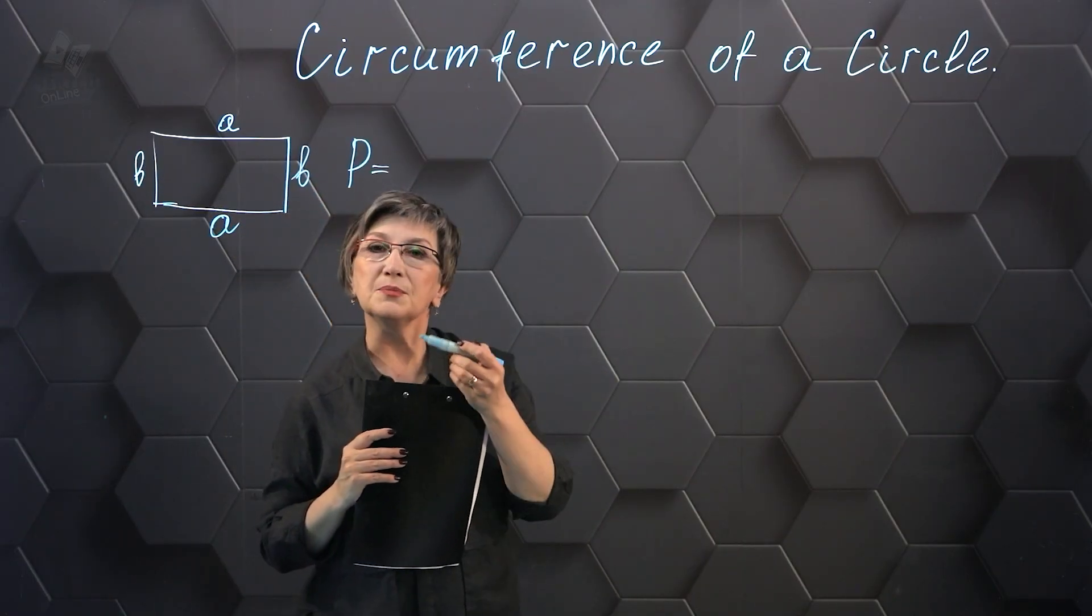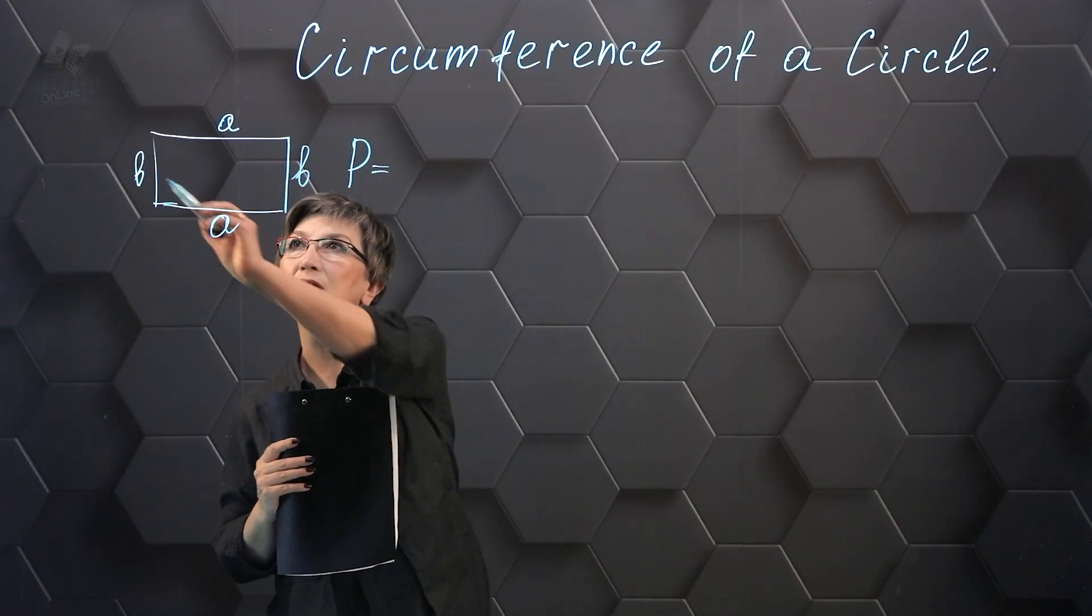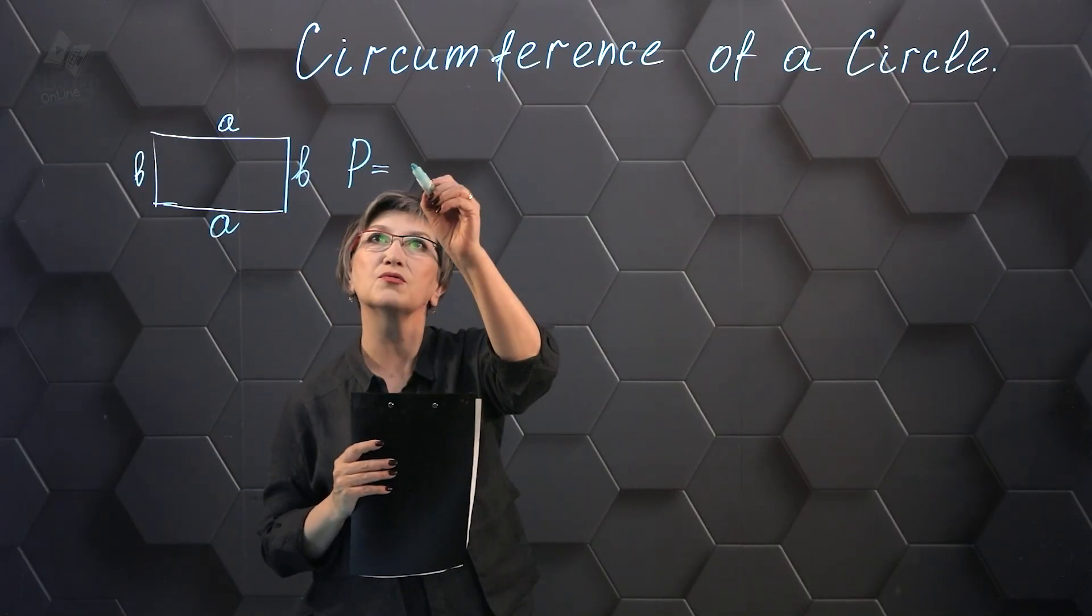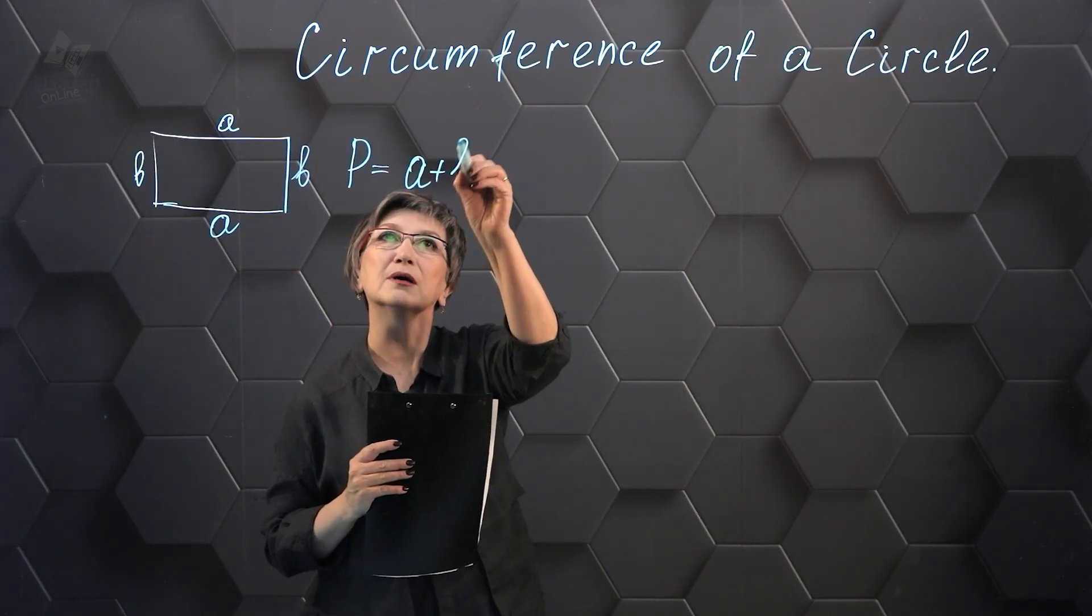And in order to find the perimeter, I need to add up the lengths of all the sides and the result is the formula (A + B) × 2.